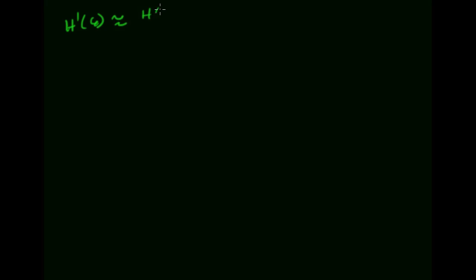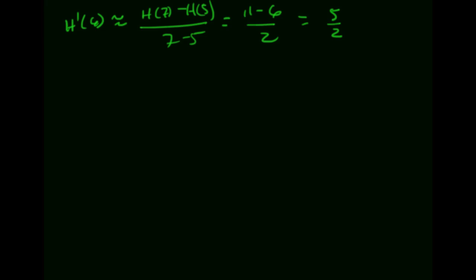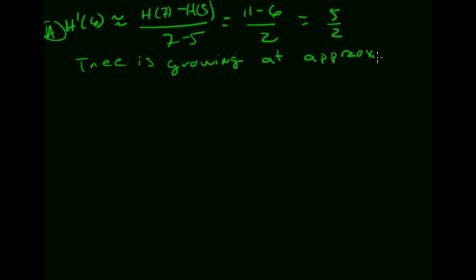Problem four uses a data table where h(t) is the height of a tree after t years. Part a: estimate h'(6). Since 6 is not in the table, use the values at t = 5 and t = 7: h'(6) ≈ (h(7) - h(5)) / (7 - 5) = (11 - 6) / 2 = 5/2. The tree is growing at approximately 5/2 meters per year when t = 6 years.